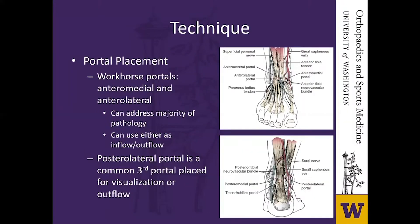The two workhorse portals in the ankle are the anteromedial and anterolateral portals. The anteromedial portal is just medial to the tibialis anterior tendon at the level of the joint, being sure to avoid the saphenous vein and nerve. The anterolateral portal is placed just lateral to peroneus tertius, avoiding the superficial peroneal nerve. In most patients without significant edema, you can trace the path of the SPN as it crosses laterally across the ankle joint. The key is to use the nick-and-spread technique — incise the skin, use blunt dissection before making your arthrotomy, rather than blindly incising directly into the joint.